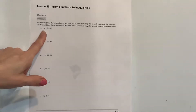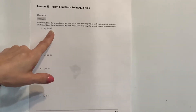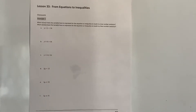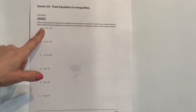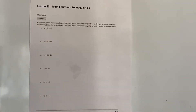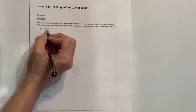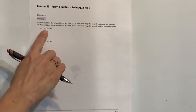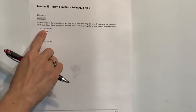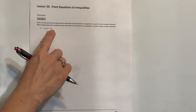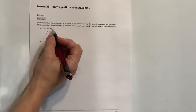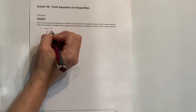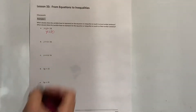So we've got y plus 6 equals 16. The number sentence is true if I figure out what value y has to be. For it to be true, I need y by itself, so I subtract 6 from both sides. 16 minus 6 gives me a value of 10 for this to be a true statement.